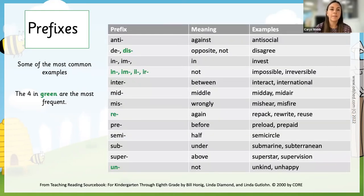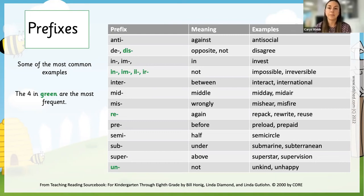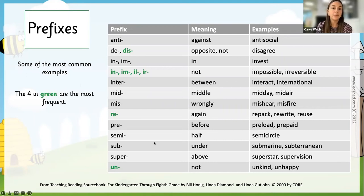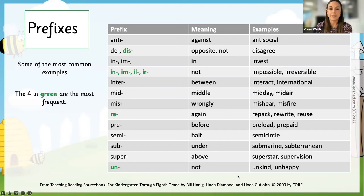According to some sources, nine prefixes account for 75% of words that use a prefix, and 20 prefixes account for 97% of words which use prefixes. So if we choose carefully which prefixes to explicitly teach, it opens the door to a whole load more words that children can spell and use in their vocabulary. The four most frequent ones are highlighted in green, and teaching the meaning of the prefix and how that changes the meaning of words helps children start to look at those different patterns.